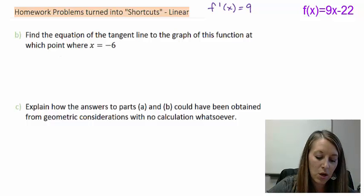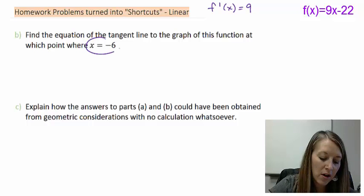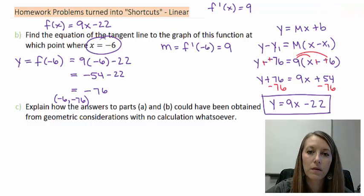In part a, we figured out f prime of x is equal to 9. Now, we want to find the equation of the tangent line to the graph of this function where our x value equals negative 6. You hopefully have already done the work to this on your own. Let's see if your answer matches what I come up with.